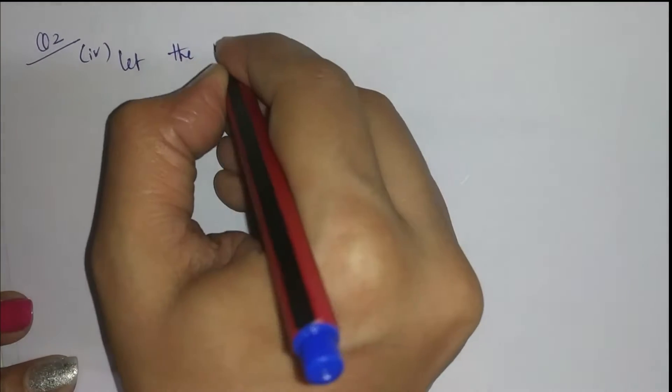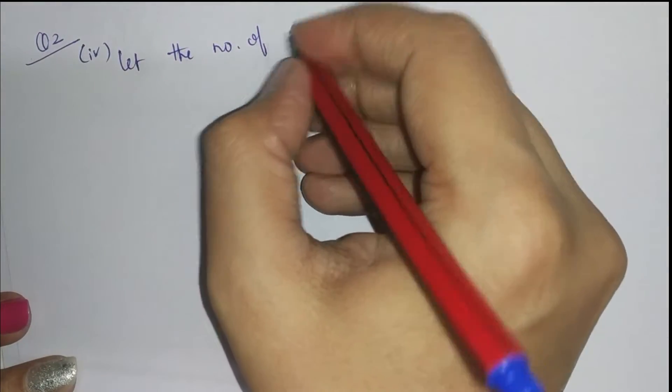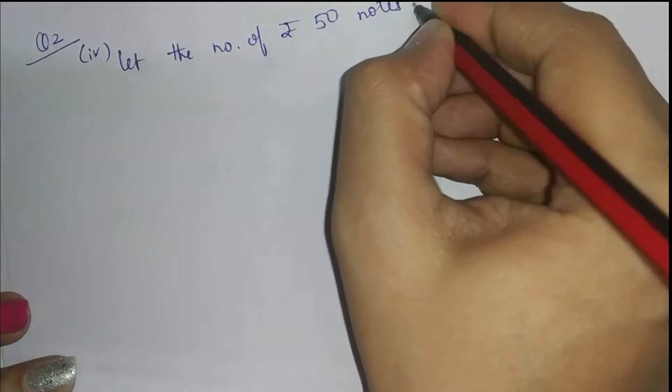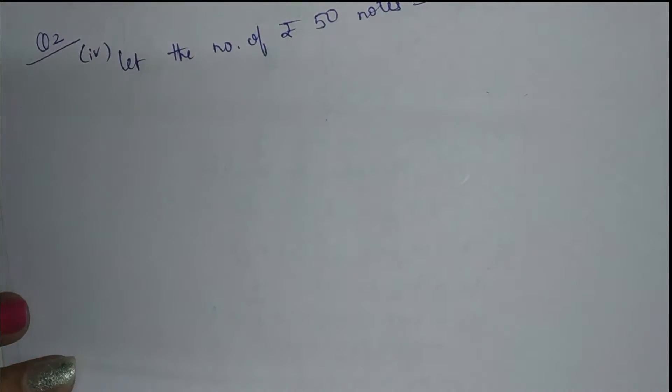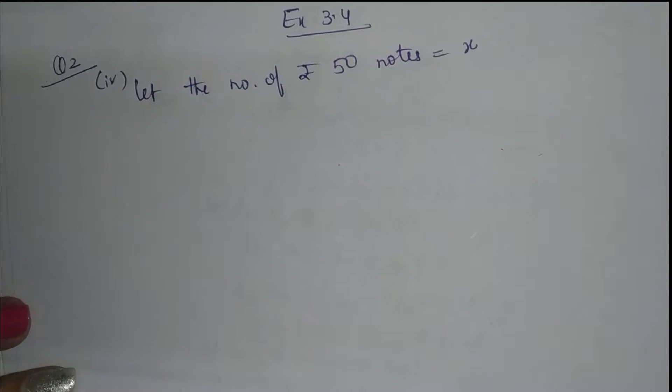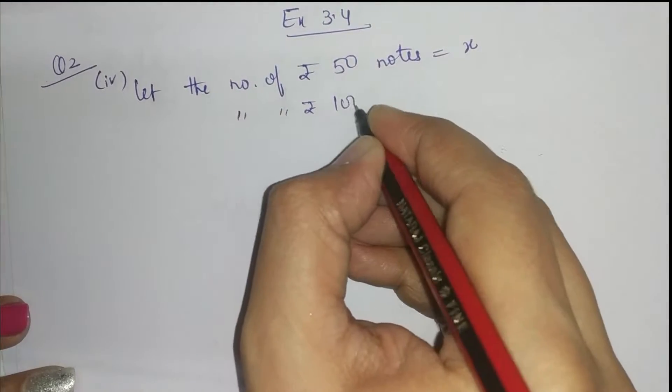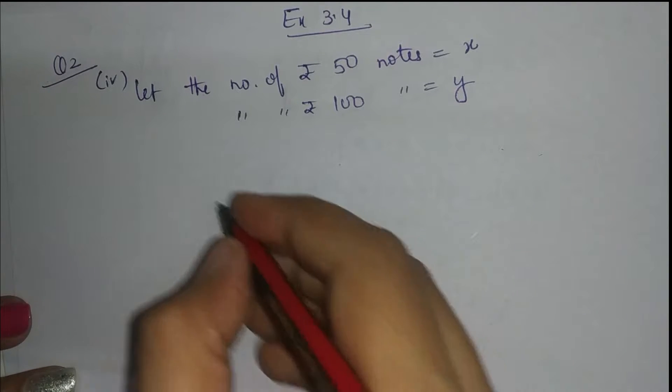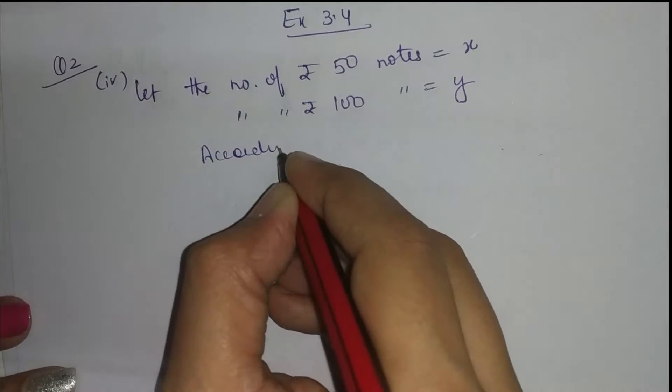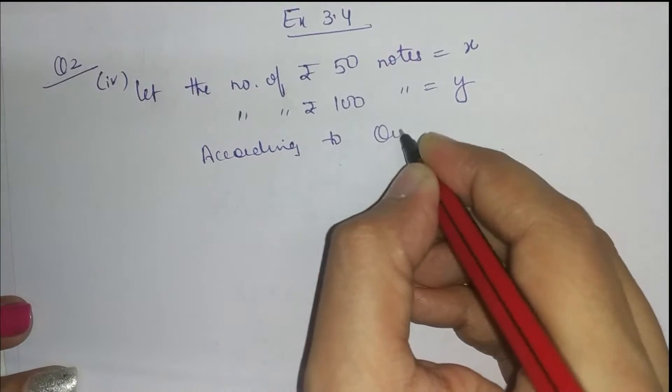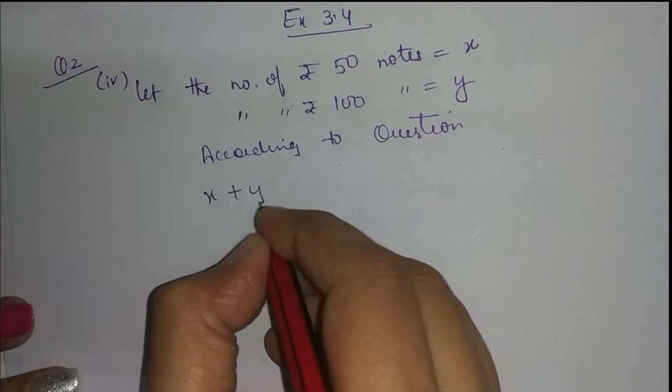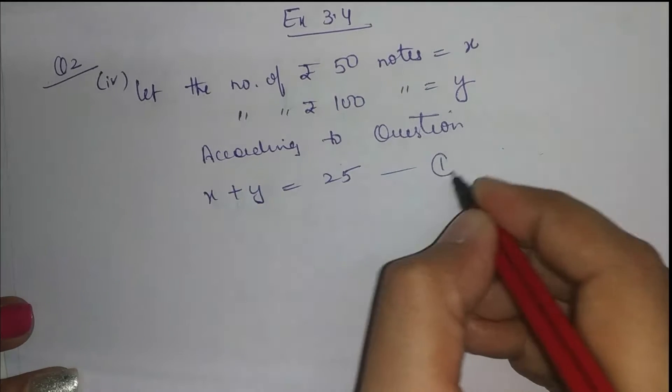Let the number of rupees 50 notes be x. Uske baad according to question, hamaari statement bane ki usko kitne total notes mili hai? 25. To means x aur y ko total karenge, to 25 notes. First equation.